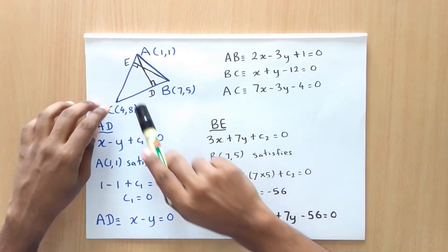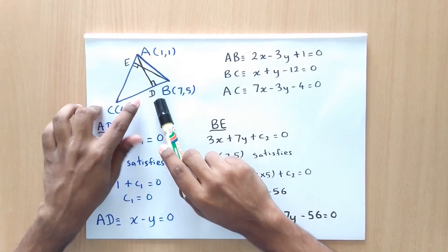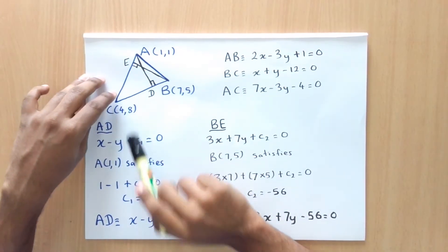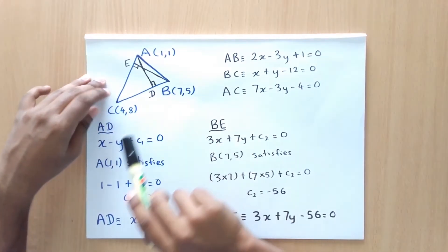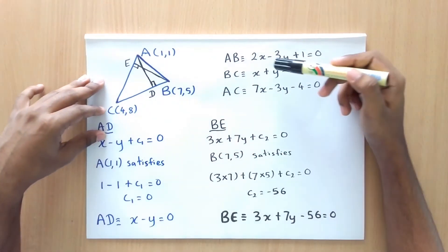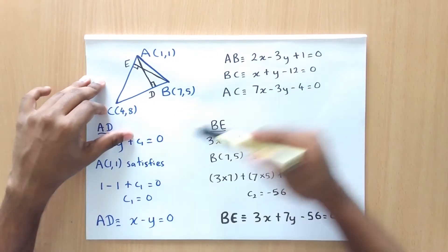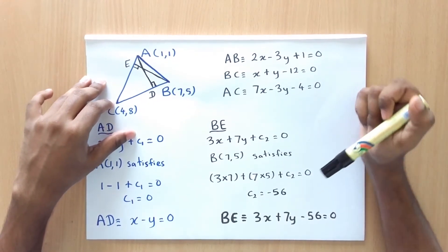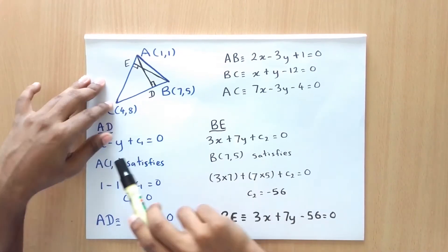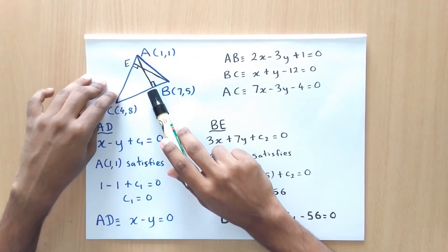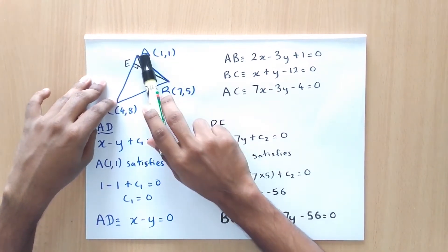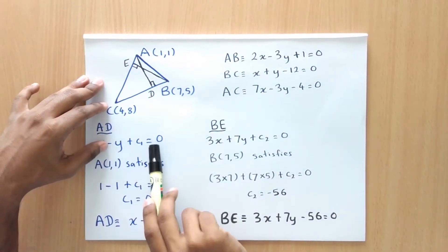Now let's take the perpendicular of the line BC drawn from A. So since it is perpendicular to BC, we know that the equation of AD can be written as x minus y plus C1 equals 0. Now we need to find the value of the constant C1. We know that this line AD passes the point A, that is 11. So A satisfies this equation.